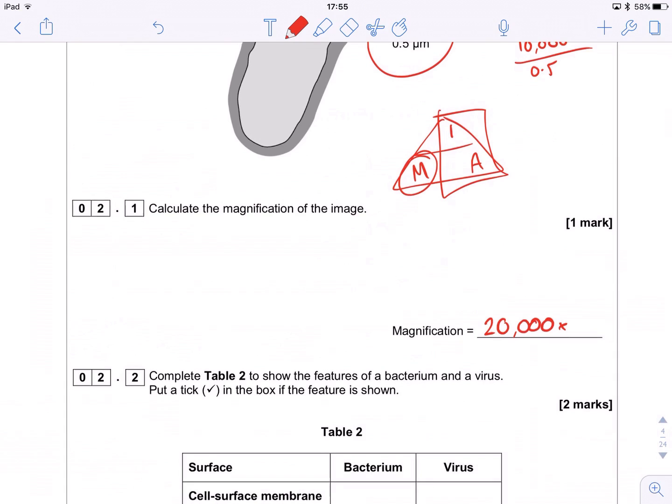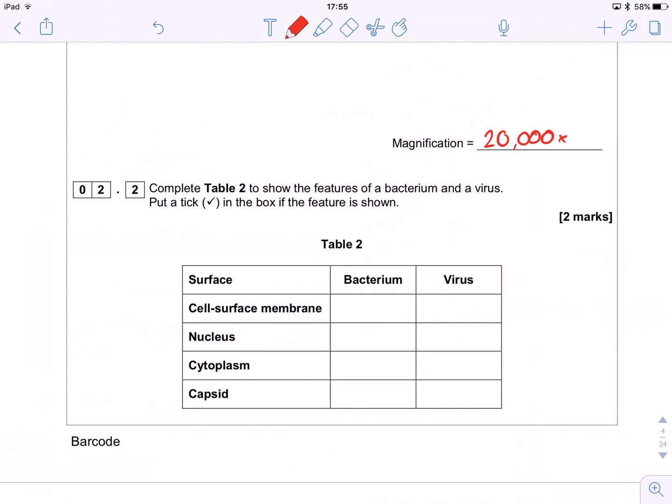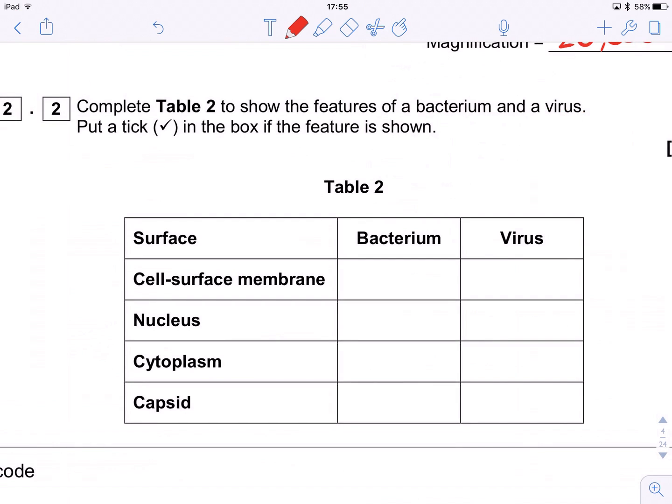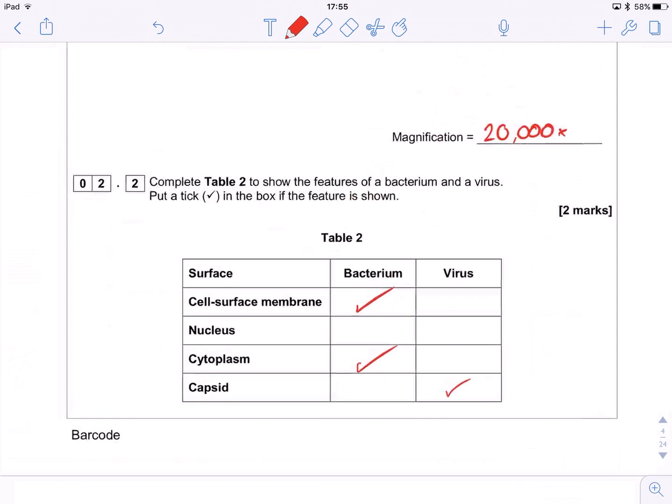Next one, tick box question again. This should just be straight off the top of your head. And again, this question popped up in paper one. I don't think we're going to particularly need this in 2016, but for the future, it's here for posterity. So bacterium, yep, cell surface membrane, no nucleus. They do have a cytoplasm, however, and the only thing on here that is true of a virus is a capsid. And there we go, two marks, nice and straightforward.